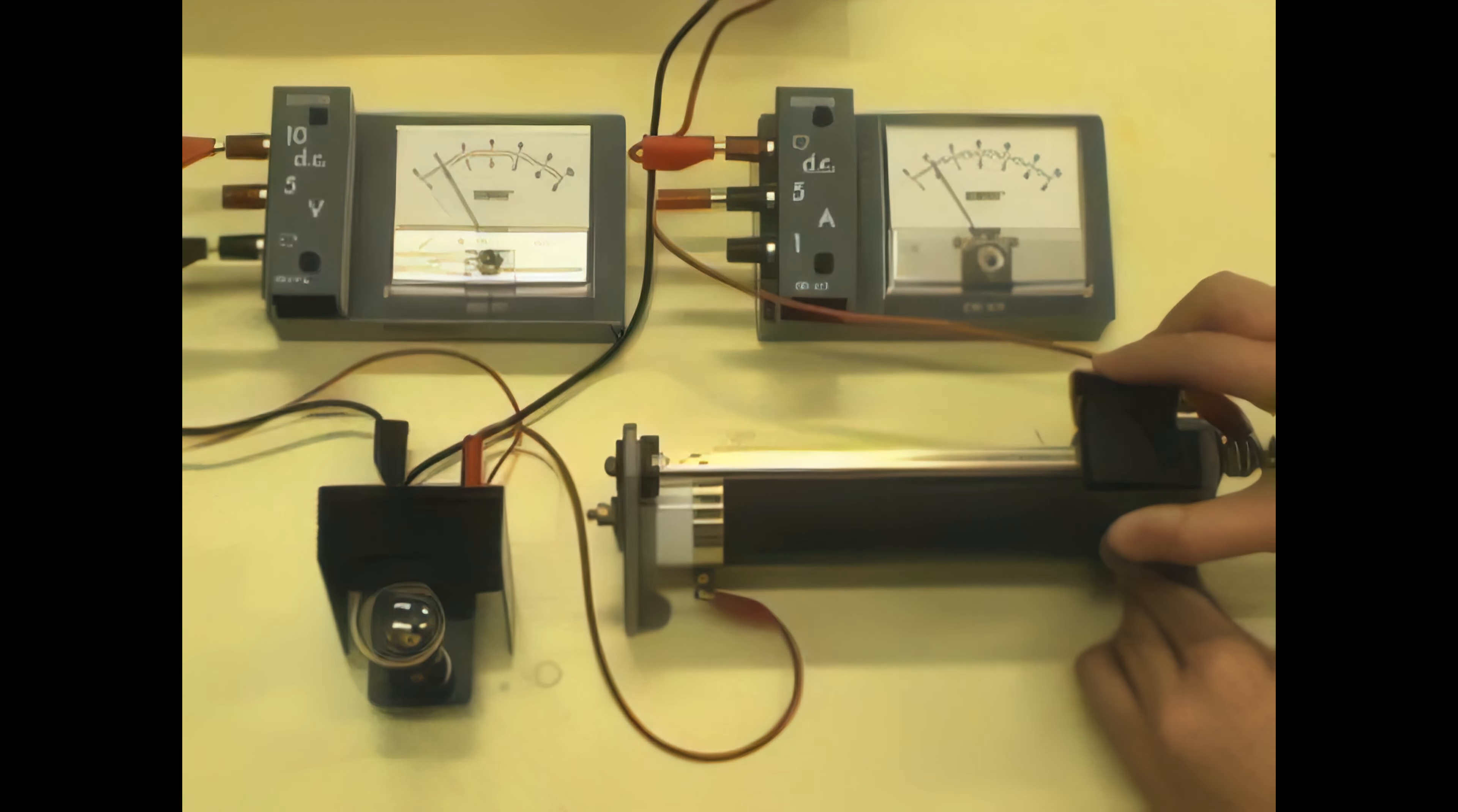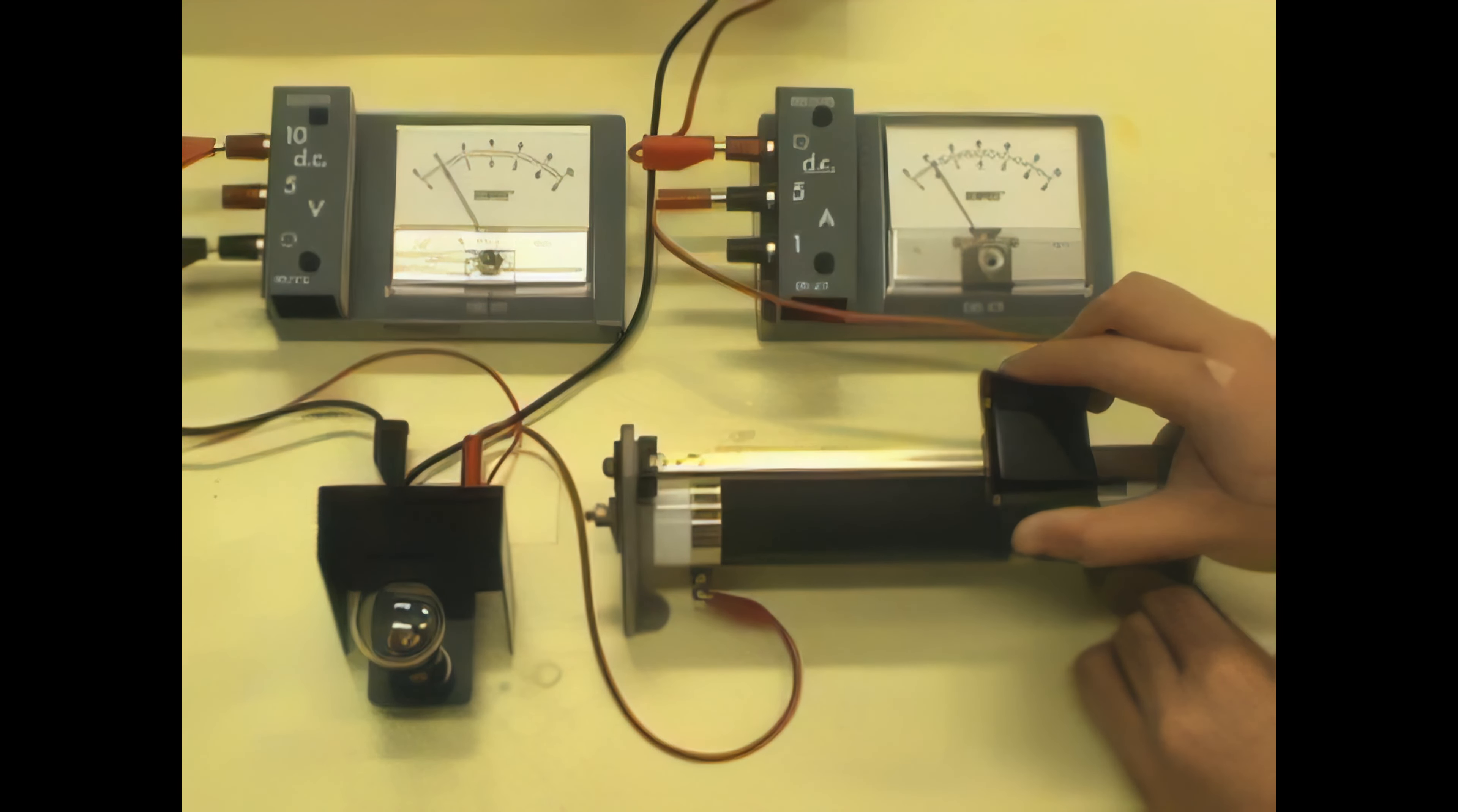Start with a small current. Adjust the rheostat to increase the current flowing through the tungsten filament slowly.